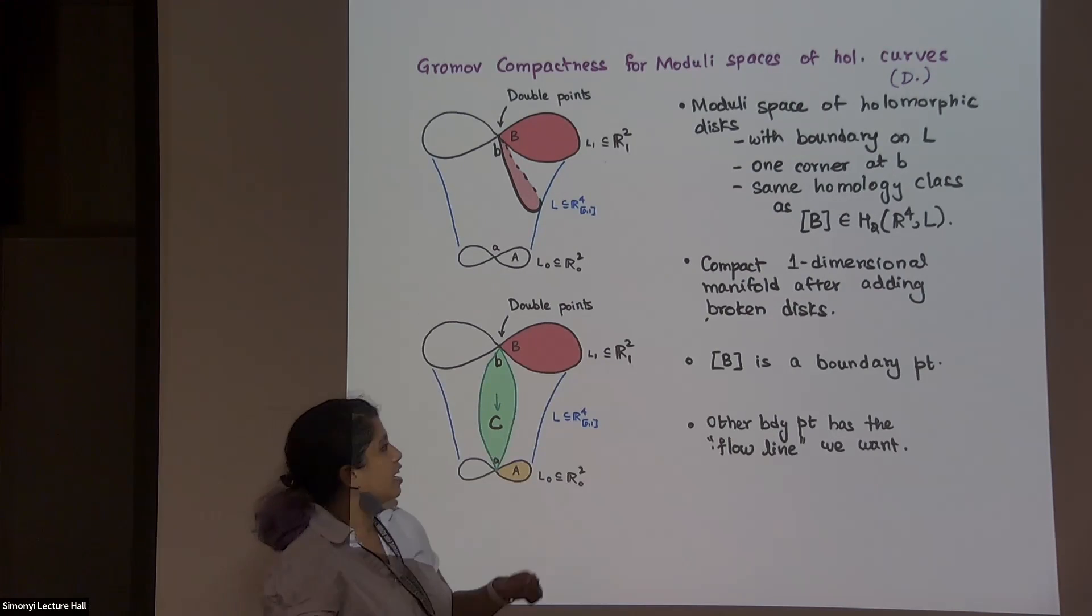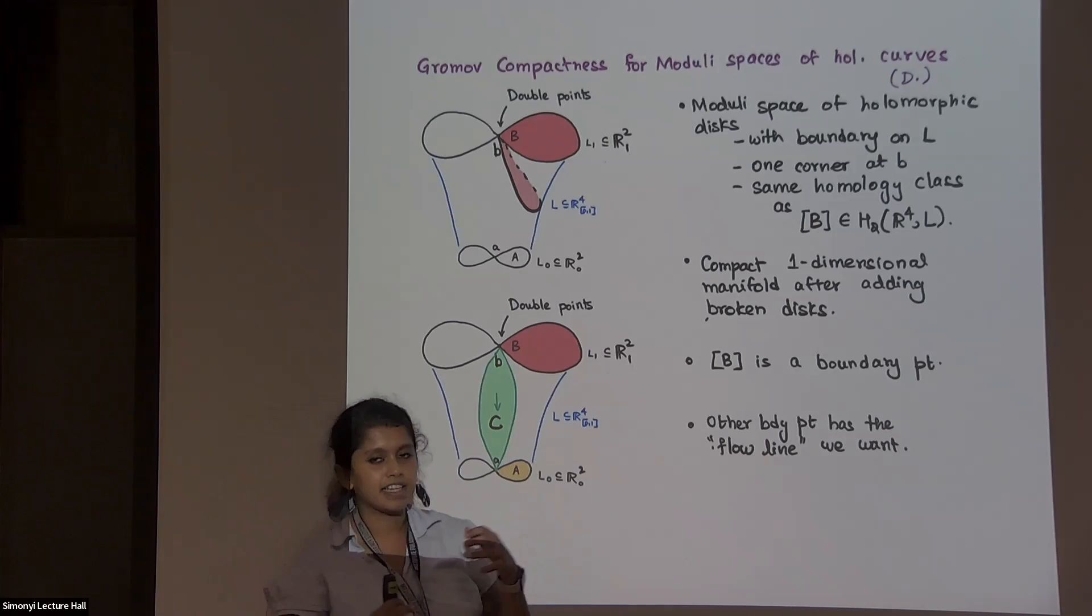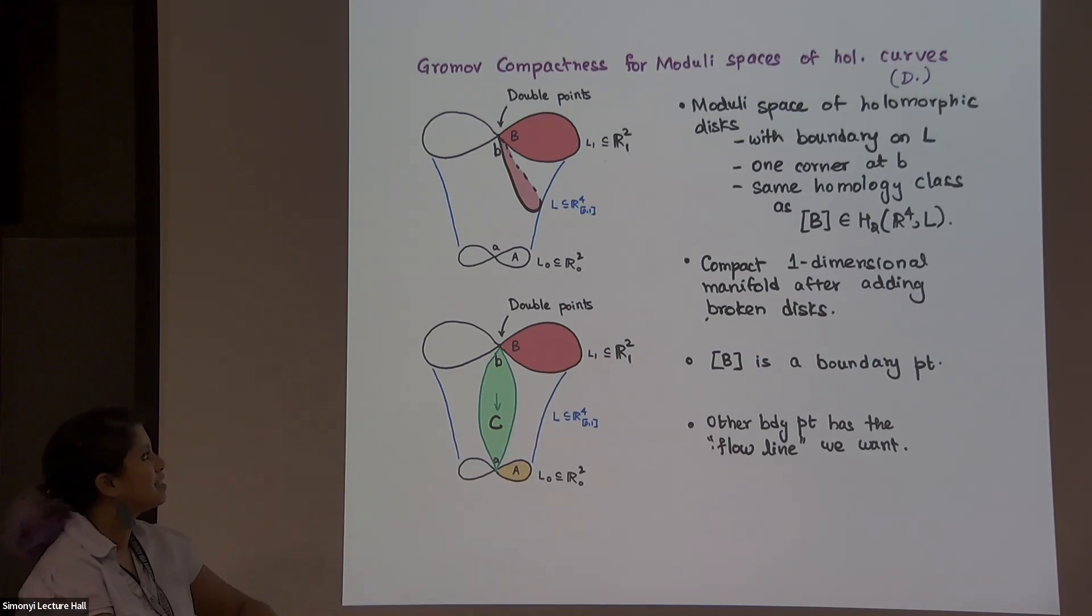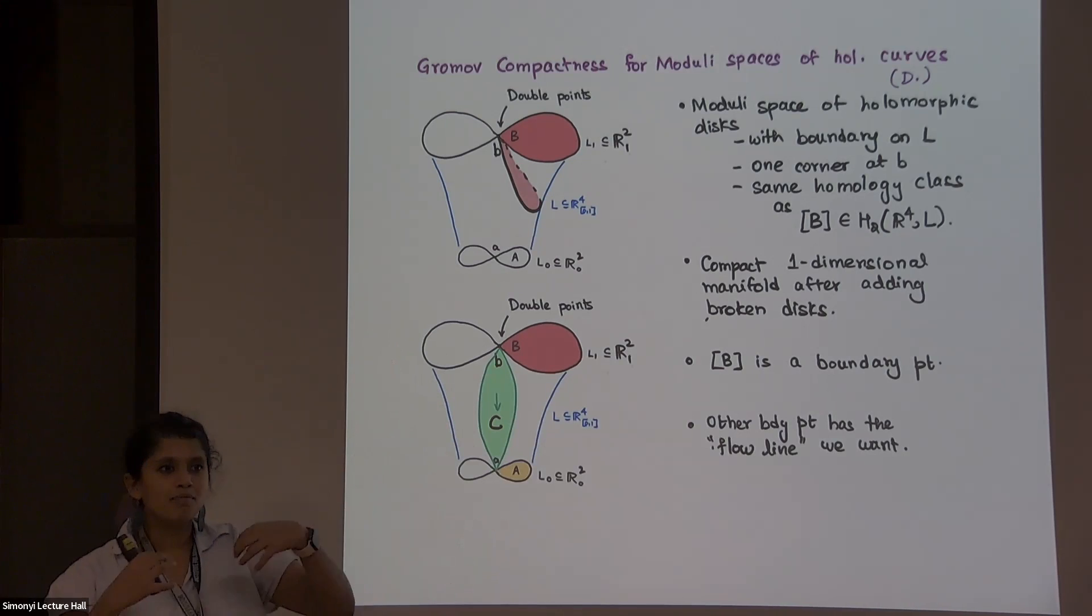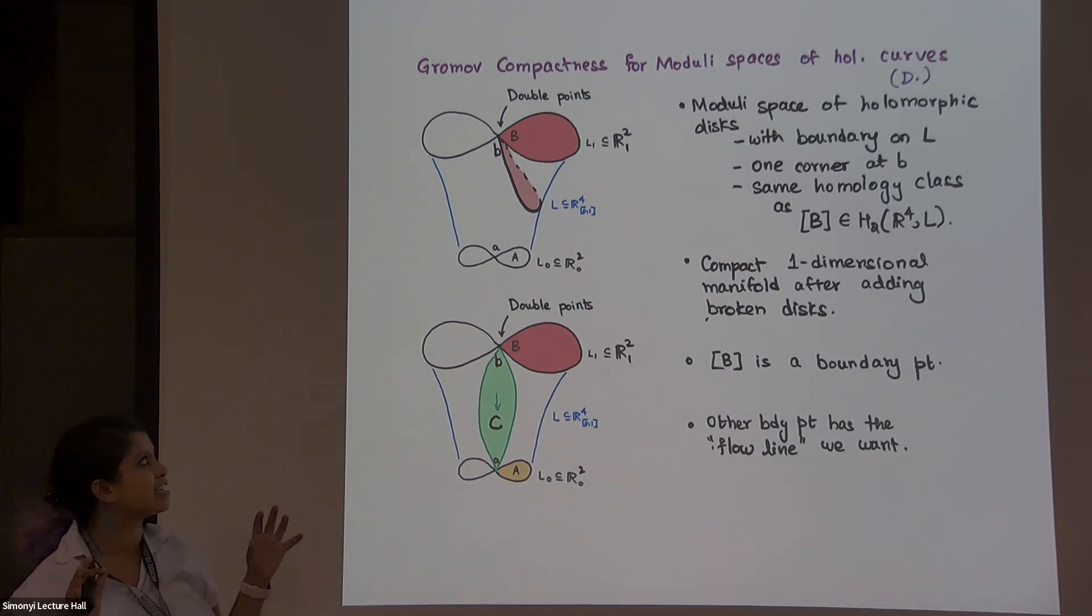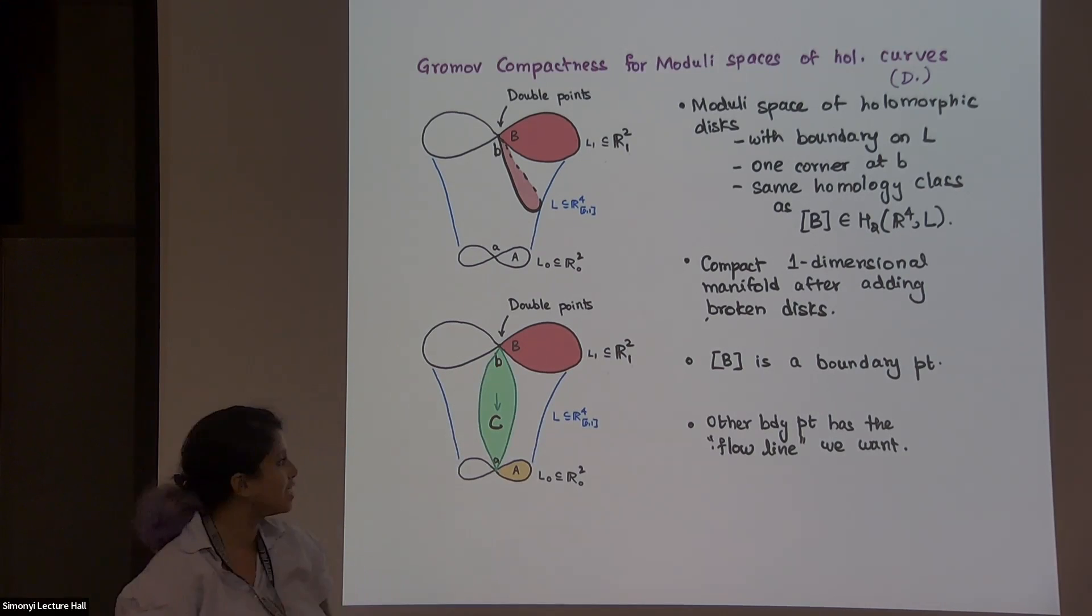So that defines a moduli space. And you can show that it's compact by doing some things. And then you do some index calculations and show that it's one dimensional. And then you show some transversality stuff. So it's a manifold. But all this happens after you add in these things called broken discs, which in this picture is like this green C and that horizontal A. So you have to add multiple discs, which still satisfy those conditions with a sufficient generalization of what disc means.